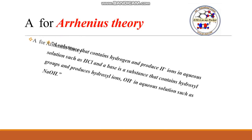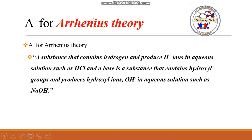What does Arrhenius say? Arrhenius says that a substance that contains hydrogen and produces hydrogen ions — we call it a proton — in aqueous solution (meaning in water), such as HCl, is an acid. A base is a substance that contains hydroxyl groups and produces hydroxyl ions in aqueous solution. So HCl gives a proton and a base gives a hydroxyl ion.